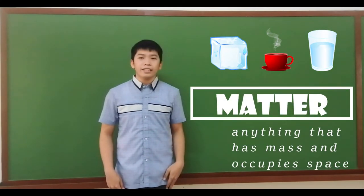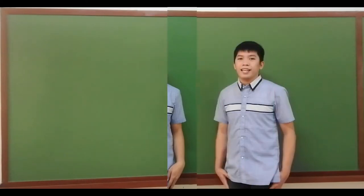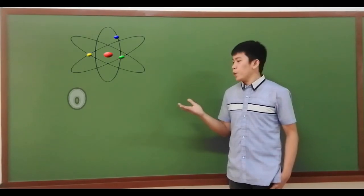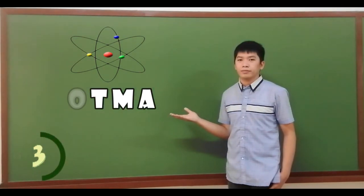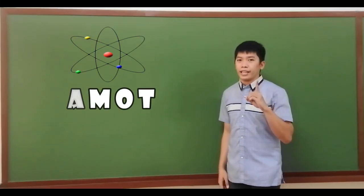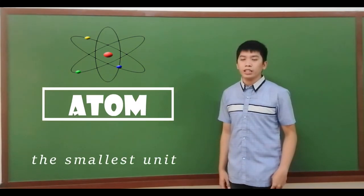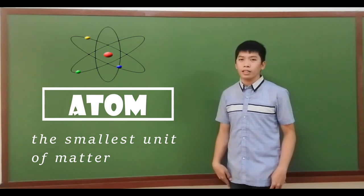As we all know, anything that has mass and occupies space is matter. Let us have the second picture. What is this? Correct! It is Atom, the smallest unit of matter. It is the reason why it is called the building blocks of matter.